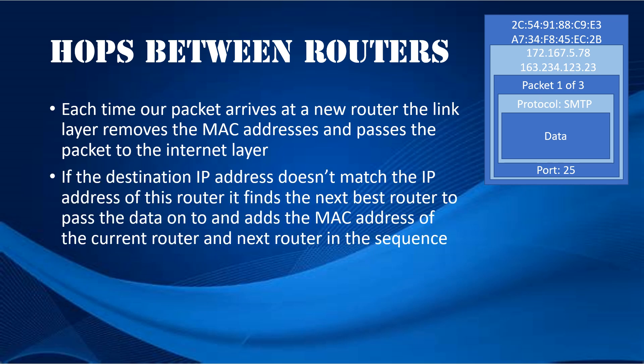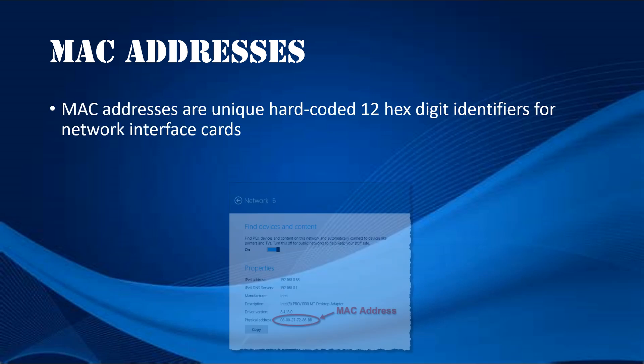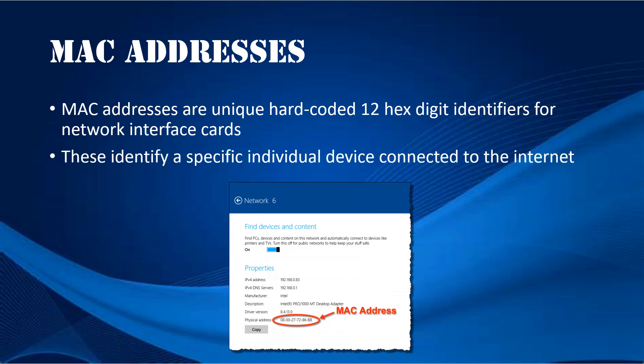Here, the destination IP address is compared with the current IP address, and if it doesn't match, the router finds the next best router to pass the data onto and passes it back to the Link Layer. Here, the MAC Address of the current router and the next router in sequence are added, and it's passed on. It may take quite a number of hops before it eventually reaches its final destination. MAC Addresses are unique hard-coded 12-hex-digit identifiers for network interface cards, and they identify a specific individual device connected to the internet.